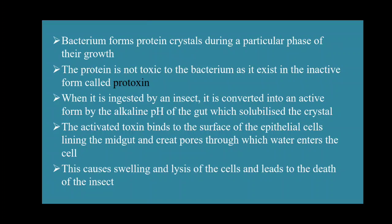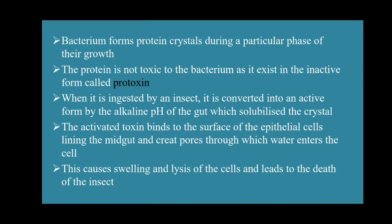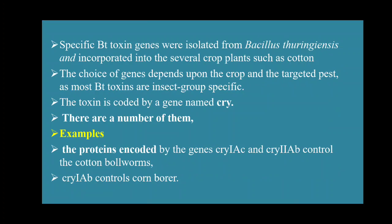Specific Bt toxin genes were isolated from Bacillus thuringiensis and incorporated into several crop plants such as cotton. We know that this protein can harm the insect. If we are able to insert this protein into a plant — for example cotton — it is advantageous, because when any insects come to eat, this protein will kill that insect.